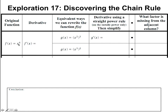We know how to take the derivative of x to the 6th — it's just the power rule. Bring the 6 down, and it'll be 6 times x to the 5th power, reducing that power by 1. But we can write x to the 6th two ways: as x squared cubed, since x squared times x squared times x squared equals x to the 6th, or as x cubed squared, meaning x cubed times x cubed. Either one is the same as x to the 6th, so we know differentiating them should give 6x to the 5th.